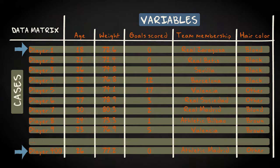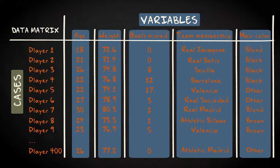You can see that no names are displayed, which means that the names are anonymized here. The variables are displayed in the columns. We have, as you can see, five variables: age, weight, goals scored, team membership, and hair color.